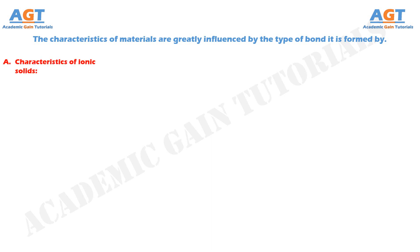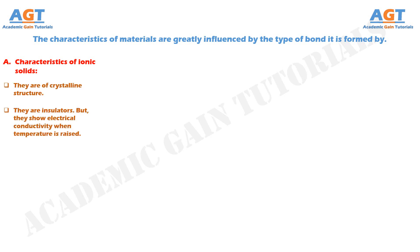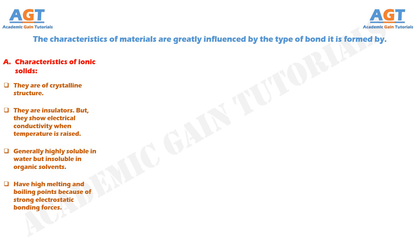Number 1: The characteristics of ionic solids. They are of crystalline structure. They are insulators; however, they show electrical conductivity when temperature is raised. They are in general highly soluble in water but insoluble in organic solvents. They have high melting and boiling points because of strong electrostatic bonding forces. Ionic bonds are non-directional.